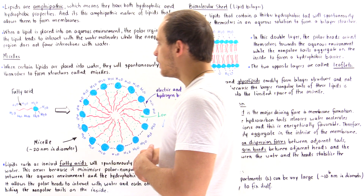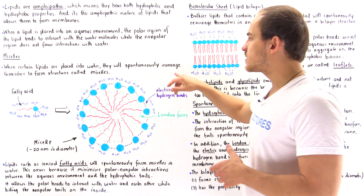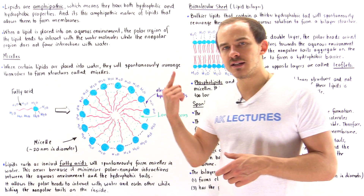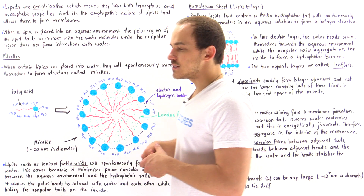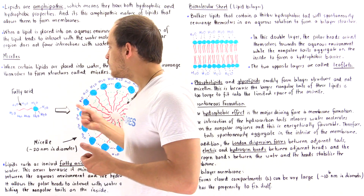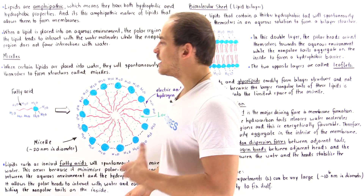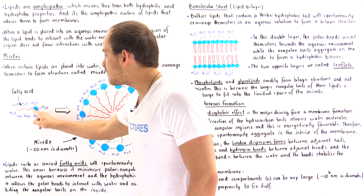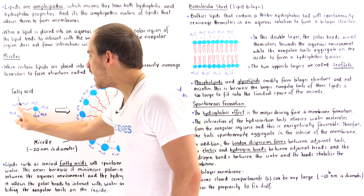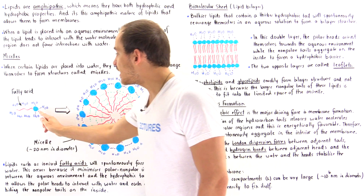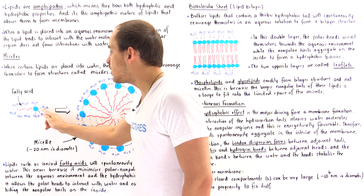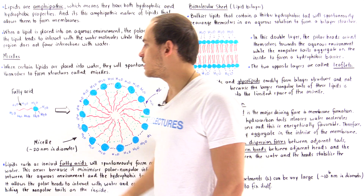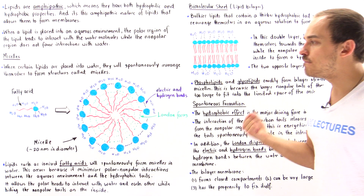When certain lipids are placed into water, they will spontaneously rearrange themselves to form structures called micelles. Let's suppose we have a single ionized fatty acid placed into solution. This fatty acid has a hydrocarbon backbone shown in red that is nonpolar and hydrophobic, and a polar section which is the carboxylic acid. The ionized version means this carboxylic acid is deprotonated, so it contains a full negative charge.